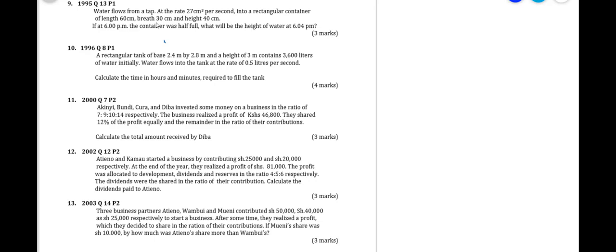So first we have to identify the volume that was added within that period of time. We'll get the time 6:04 minus 6:00pm, the time difference is 4 minutes. And the rate we are told that in one second, the container gains 27 cm³. So in four minutes, how much volume will the container gain?